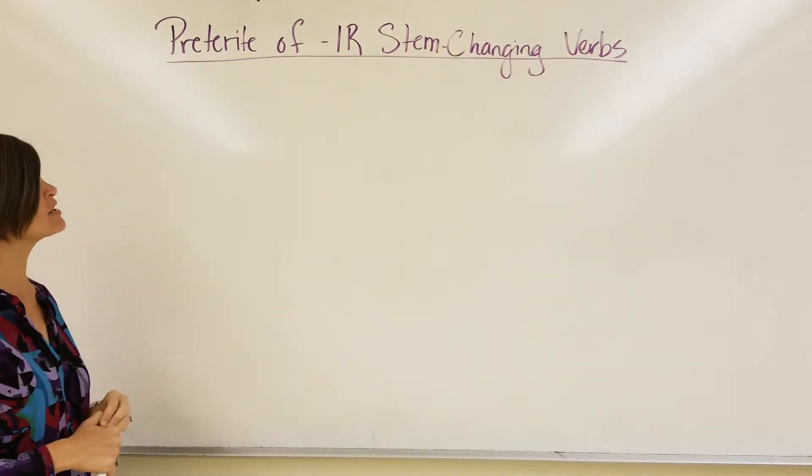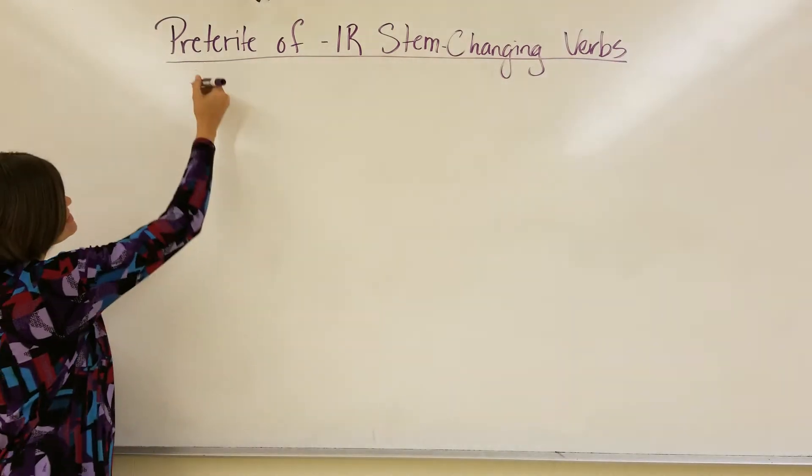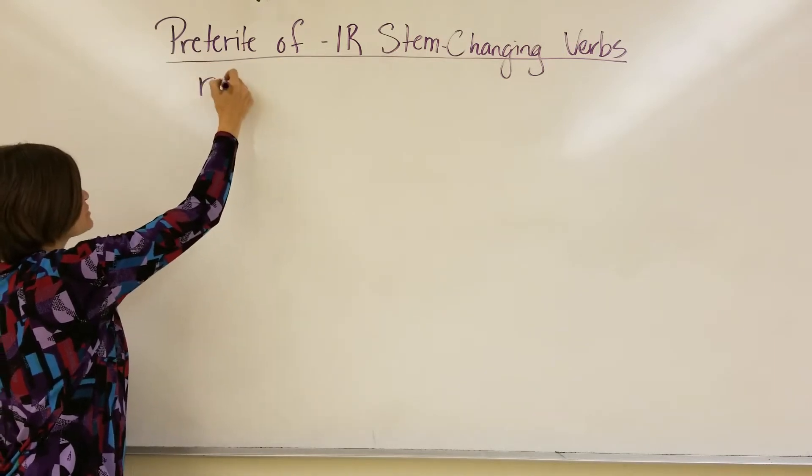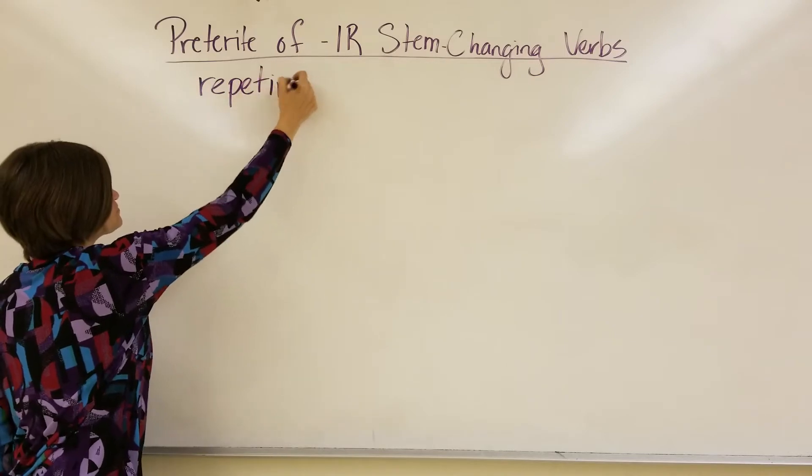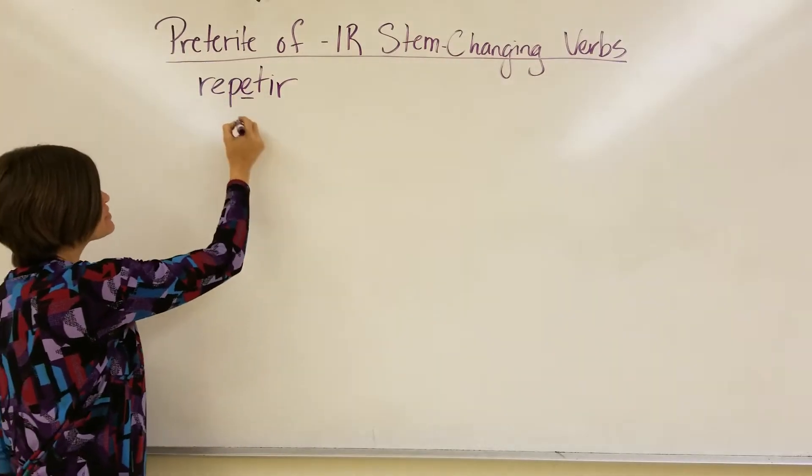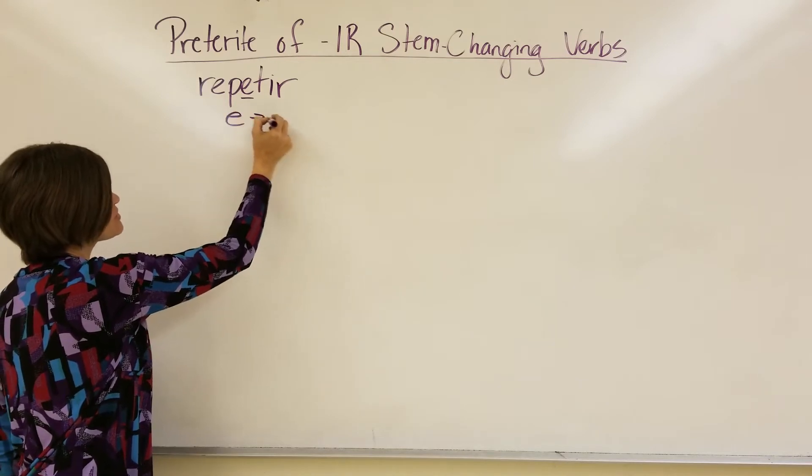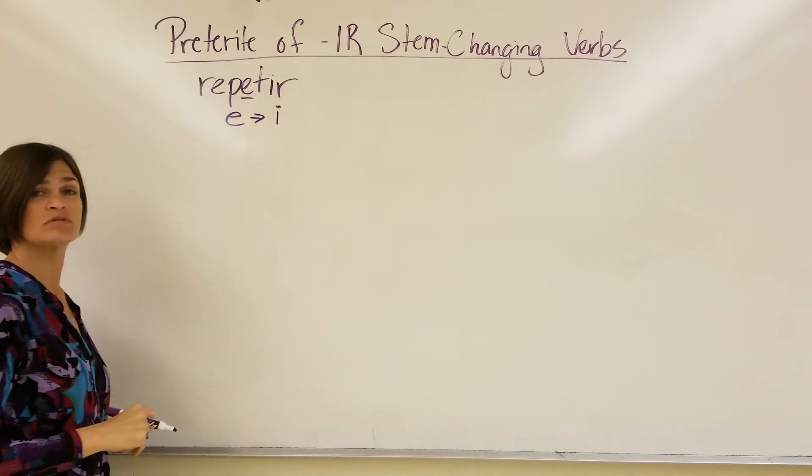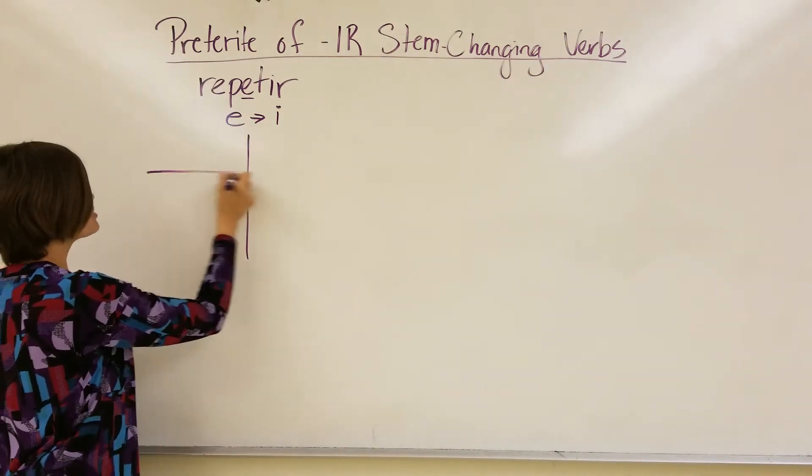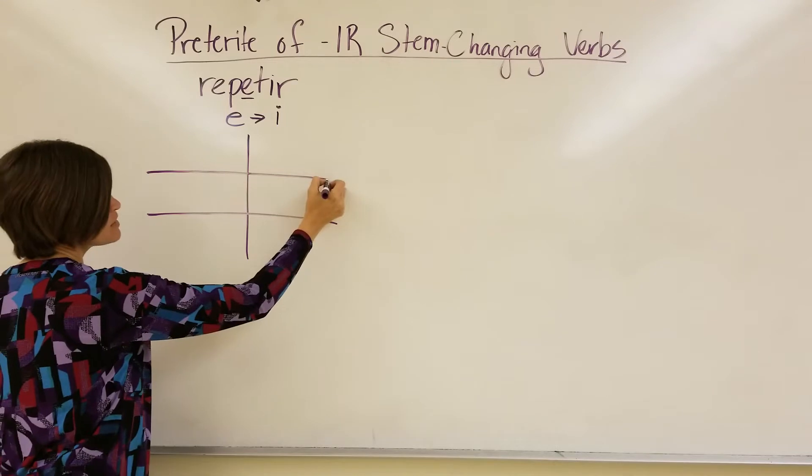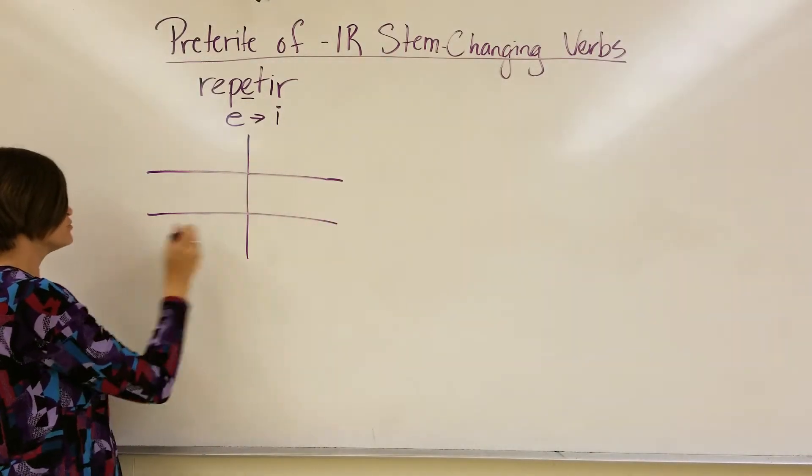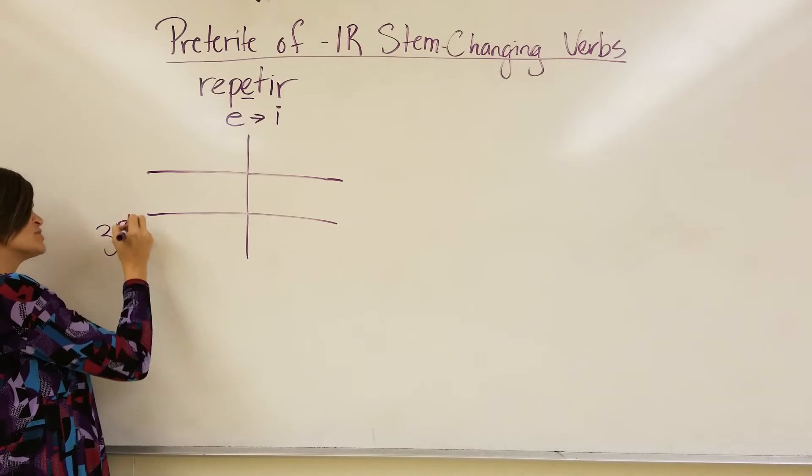So, in order to do the preterite of IR stem-changing verbs, let's take a verb like repetir. Repetir means to repeat, and the E right here in the regular conjugation of the present tense will change from an E to an I. In the past tense, when we conjugate these verbs in the preterite, they're not going to have a stem change except for on the bottom floor right here, in the third person bottom floor. This is where we're going to see a stem change.